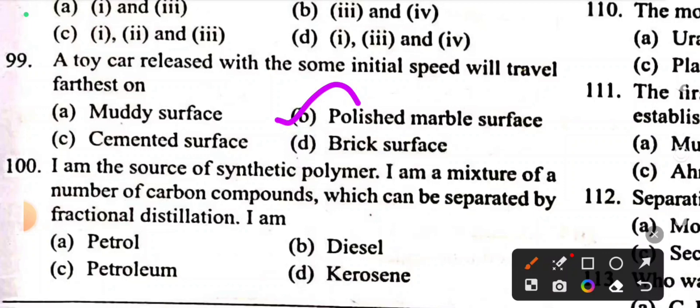Question 100: I am the source of synthetic polymer. I am a mixture of a number of carbon compounds which can be separated by fractional distillation. Answer: Option C, petroleum. Petrol, diesel, kerosene, lubricant oil, paraffin wax, LPG—all these are constituents of petroleum. Petroleum undergoes fractional distillation.